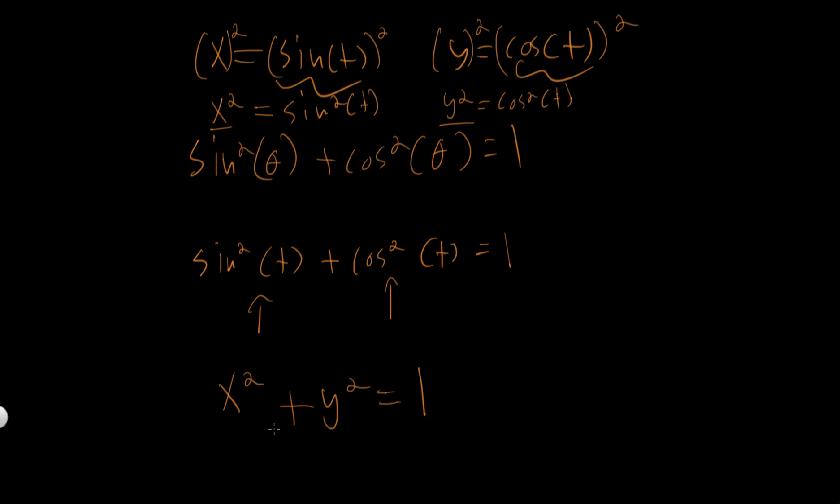So now we have a very familiar expression. Hopefully this is familiar to you - if not, review finding equation of circles. So we have x squared plus y squared is equal to 1, and this should be a familiar expression of the circle. So x and y are related such that the output of this curve will be a circle with radius 1.